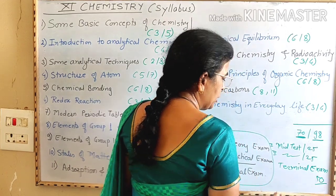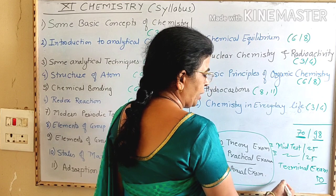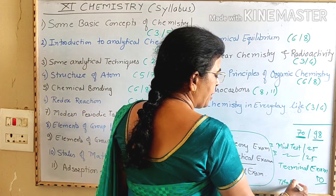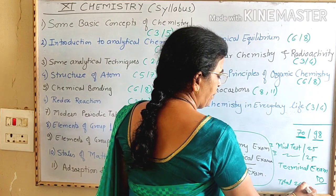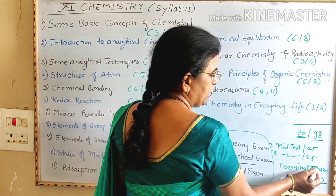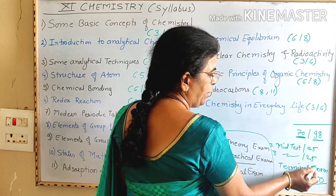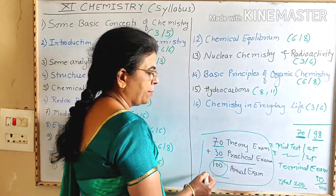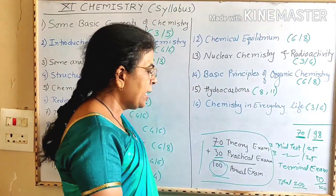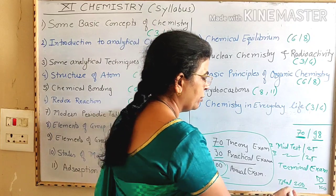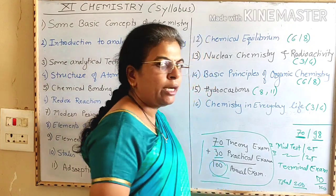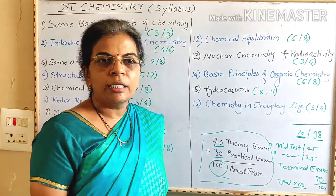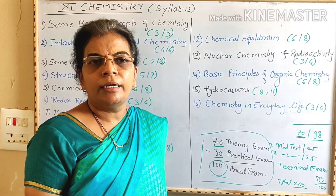The marks are 50, 50, 50, 100 — totaling 200, and an average is carried out to give a final result out of 100 marks. Thank you.